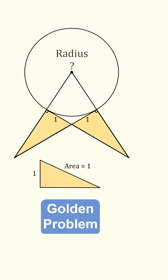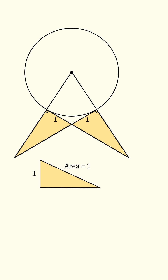To get started, suppose the other leg has length equal to x. Then since its area is equal to 1, we have x times 1 over 2 is equal to 1, which means x is equal to 2.